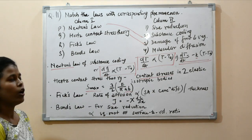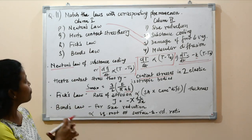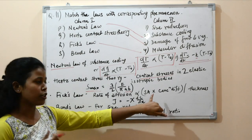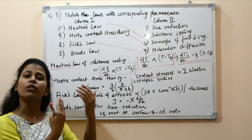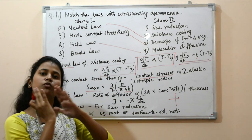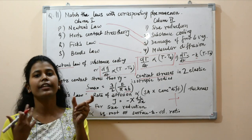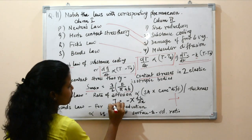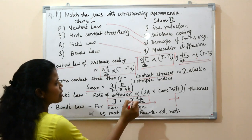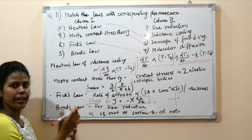This phenomenon is used for fruits and vegetables — what damage can be done due to contact — so the Hertz law applies to damage of fruits and vegetables. The maximum contact stress is given by (3/2)(F / πab), where a and b are the major and minor semi-axes of the elliptical contact area and F is the force. Next is Fick's law, which governs diffusion — the movement of mass from high to low concentration. Fick's law states that the rate of diffusion is directly proportional to the surface area and concentration difference, and inversely proportional to the thickness of the membrane. The flux J = −D(dc/dx), where D is the diffusivity constant and dc/dx is the concentration gradient.